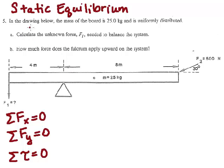It's somewhat of a balance beam problem. It says in the drawing below, the mass of the board is 25 kilograms and is uniformly distributed. Calculate the unknown force F1, that's this force here, needed to balance the system.